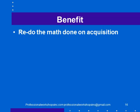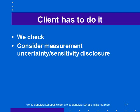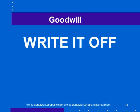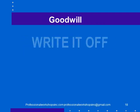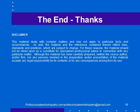For the future economic benefit assessment, we essentially redo the math that was done on acquisition — the client does it and we check it. We will consider measurement uncertainty and sensitivity disclosure. If the difference between the future economic benefit and the asset value is starting to get small, it's probably prudent for both the auditor and management to disclose that in a note. Sometimes it's simply easier to write it off. Thanks for listening.